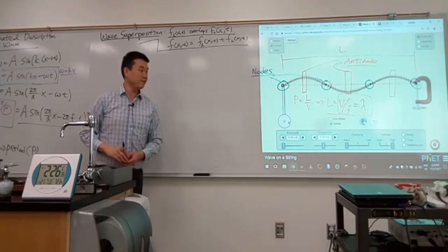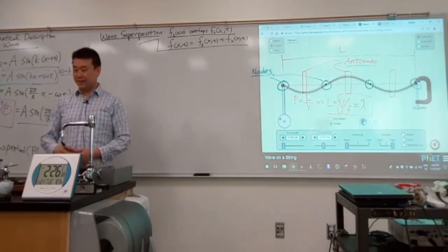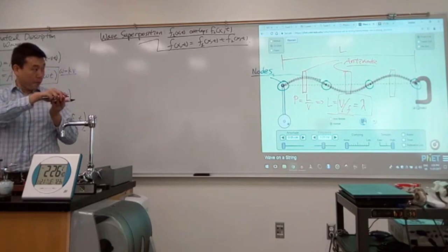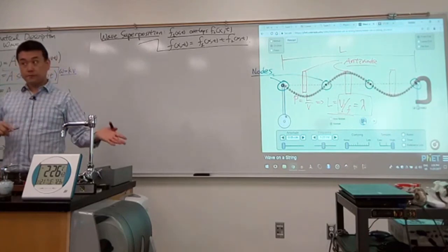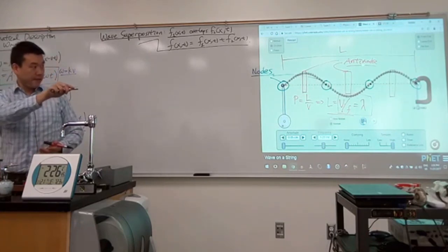It's sort of what it sounds like, the opposite of node. So if the node is the point on the standing wave that doesn't move, antinode is the point on the standing wave that moves the most.